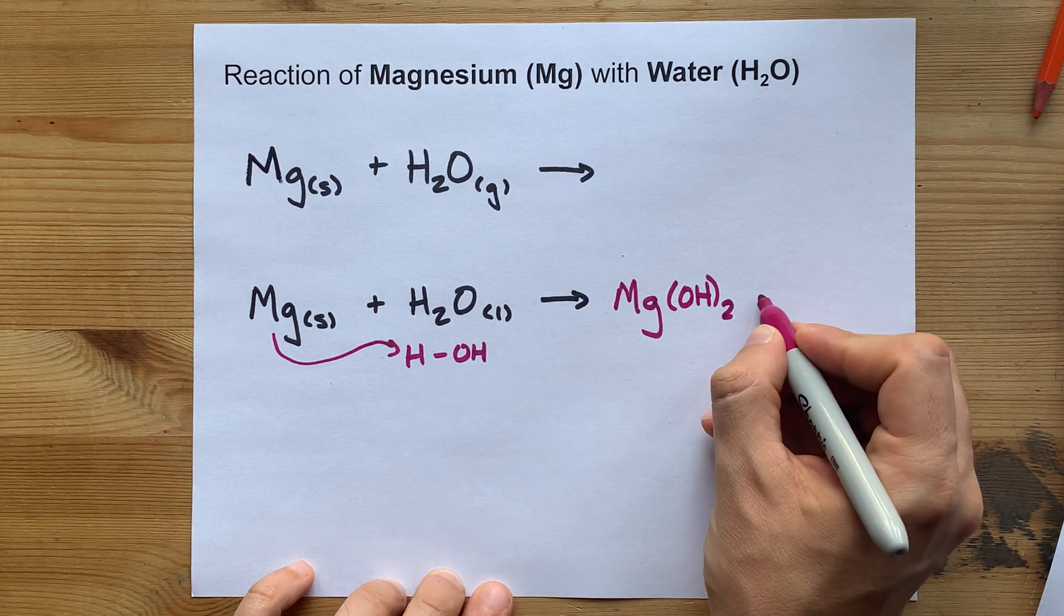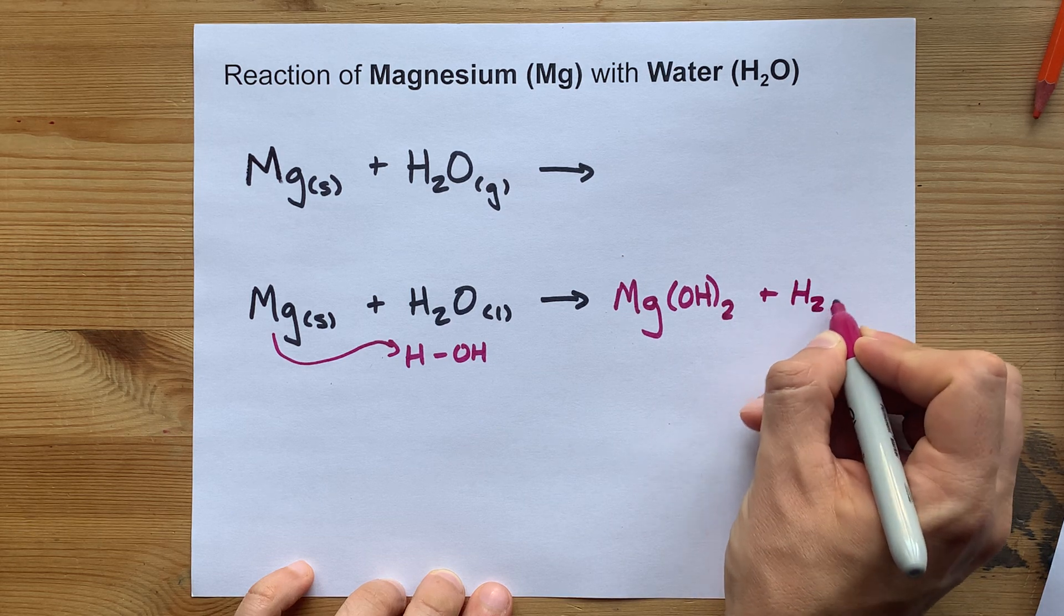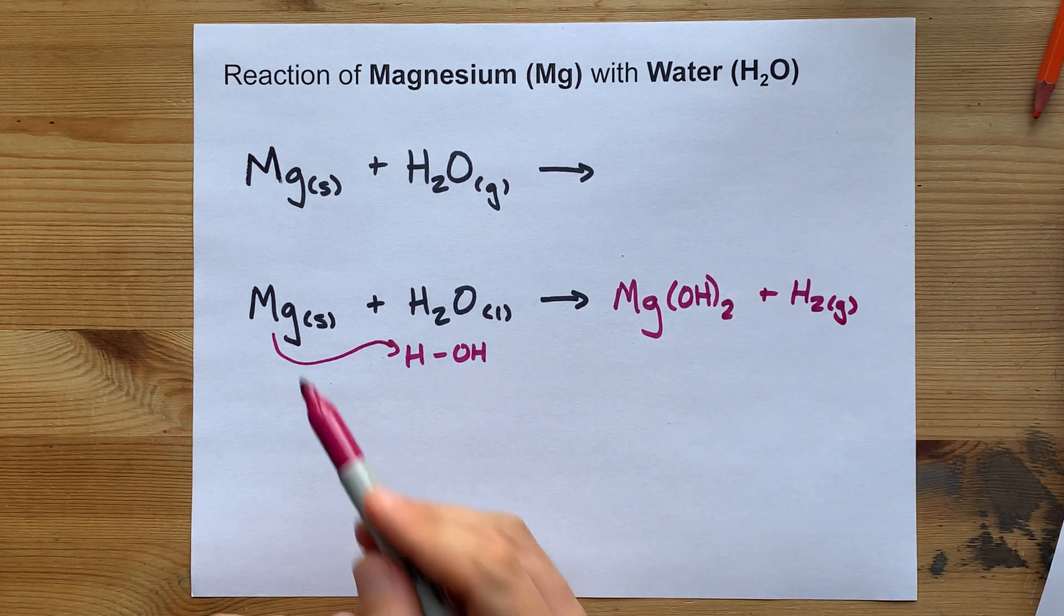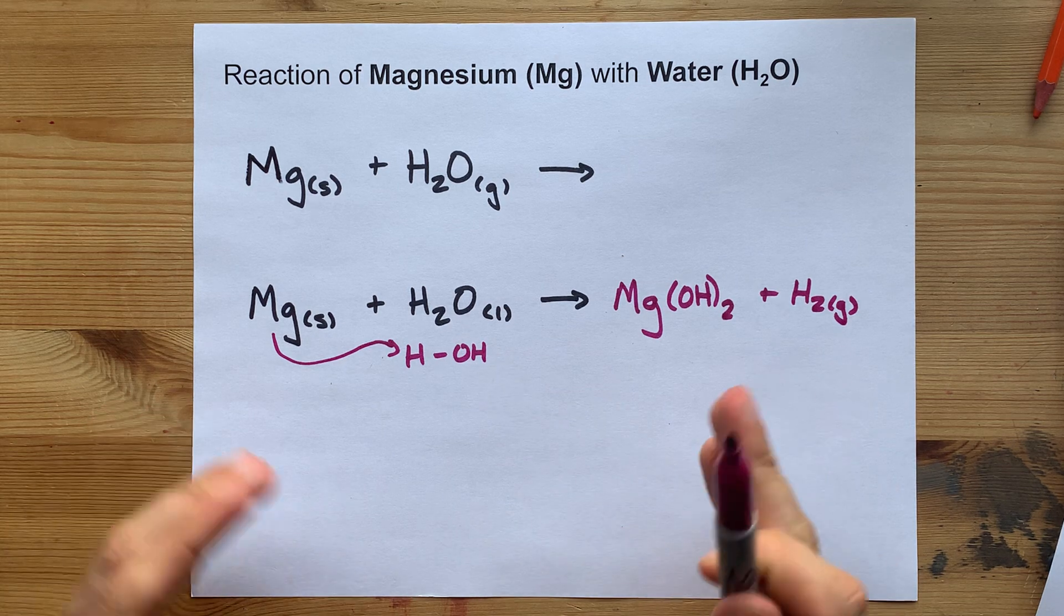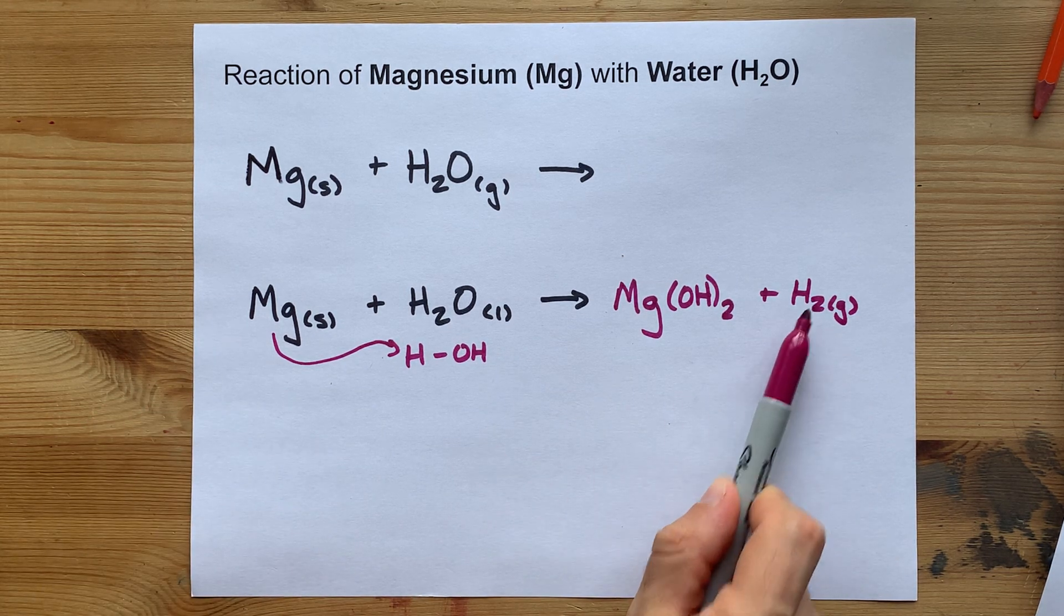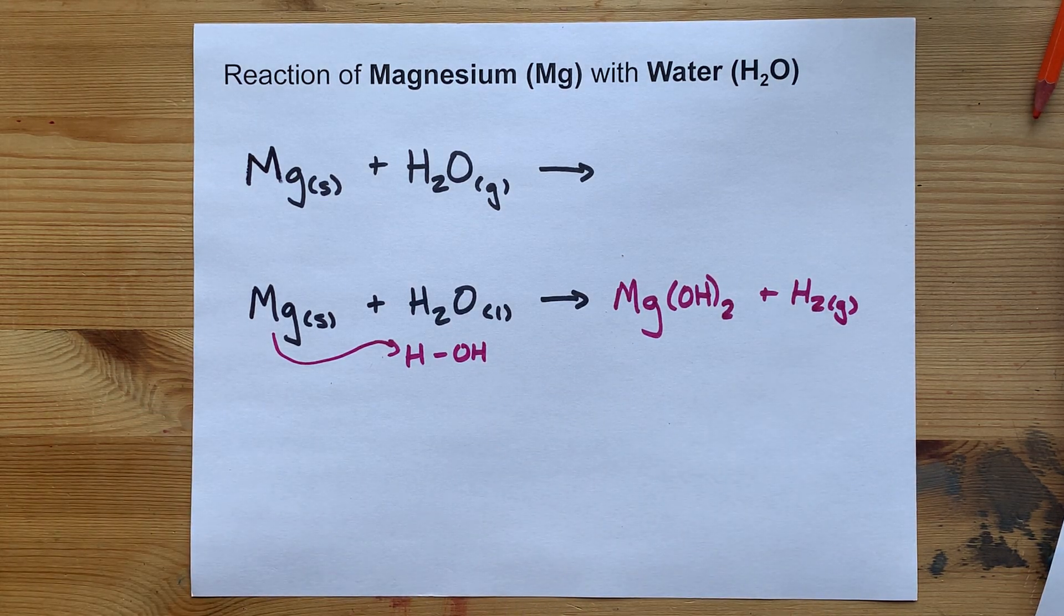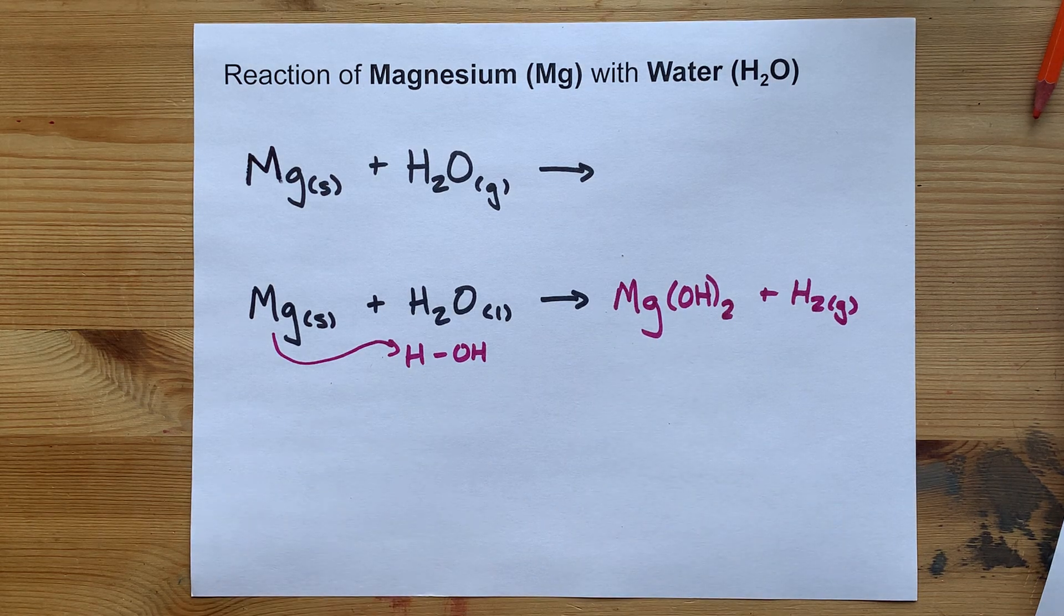The hydrogen itself becomes hydrogen gas. Most metals plus water that actually result in a reaction will give you hydrogen gas as a byproduct and a metal hydroxide.